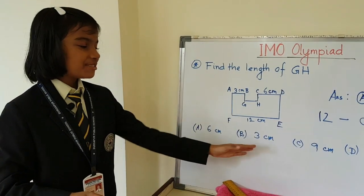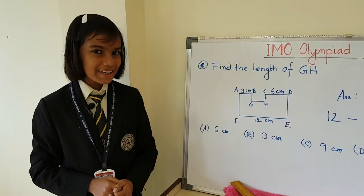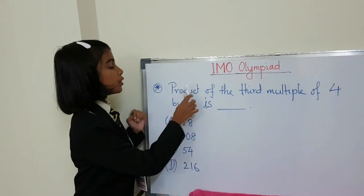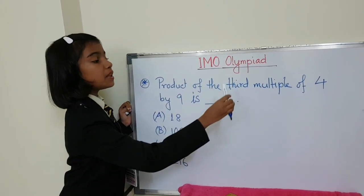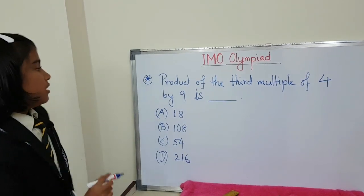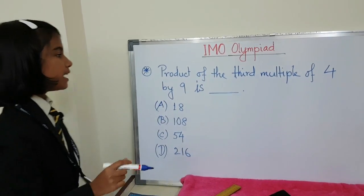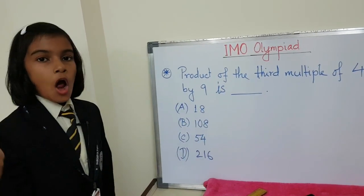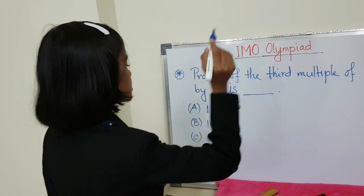Now let's do this question. Product of the third multiple of 4 by 9. Product means we have to multiply the third multiple of 4. What is the third multiple of 4? 4 ones are 4, 4 twos are 8, 4 threes are 12. It is 12.